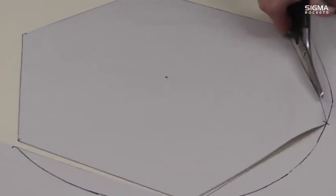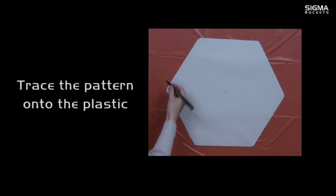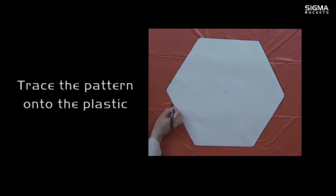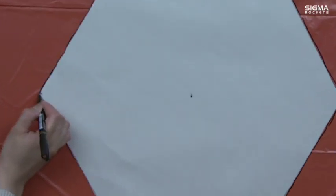Cut out the hexagon pattern. Trace the pattern onto your plastic. A good source of plastic are orange garbage bags, as shown here.